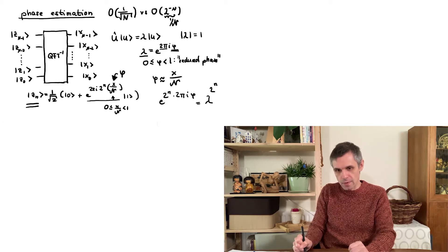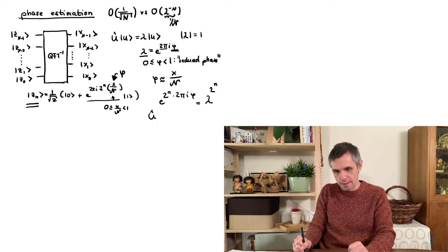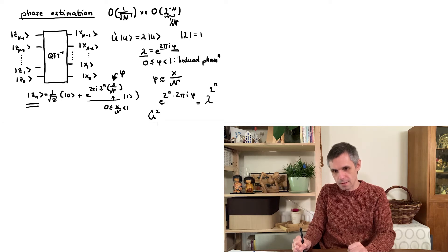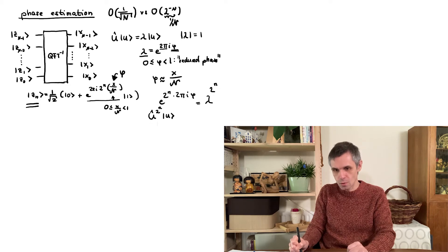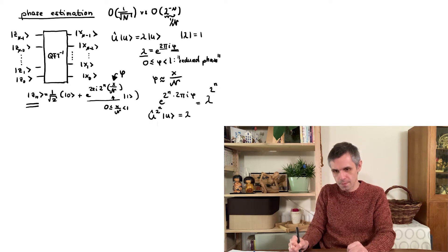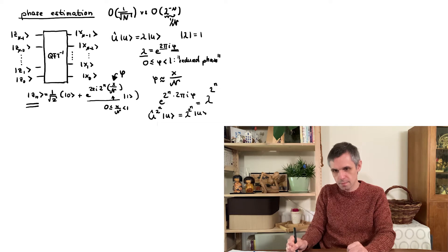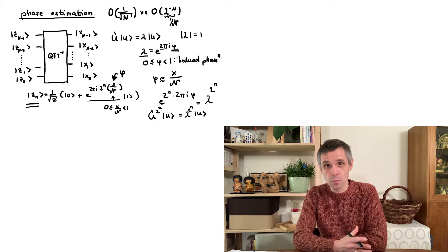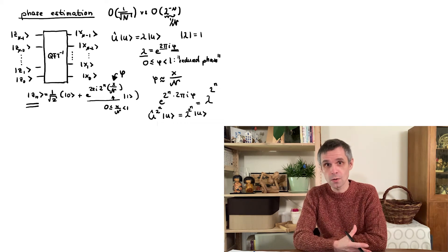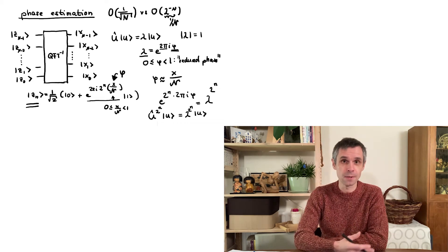And these phase factors we get, on the other hand, by applying the unitary operator u 2 to the n times to the eigenstate u. So this already tells us what we really need, namely we need to apply this operator u conditionally so that this phase factor appears in front of the state one.